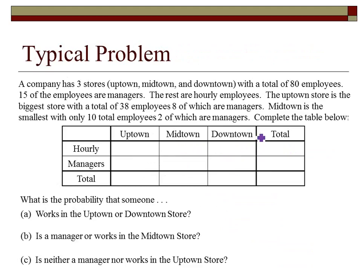This is a more typical problem where you have to do a bit of thinking and fill out a chart using the given information. A company has three stores: the uptown store, the midtown store, and the downtown store. They have two kinds of employees: hourly employees and managers. We're told there are a total of 80 employees, 15 of whom are managers and the rest are hourly. The uptown store has 38 employees, 8 of which are managers, and the midtown is the smallest with only 10 employees, 2 of which are managers.